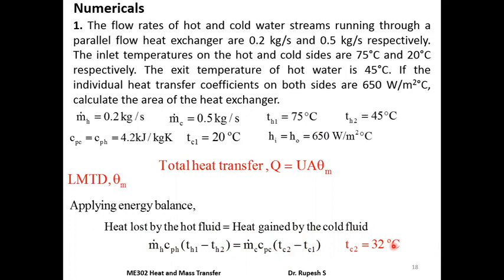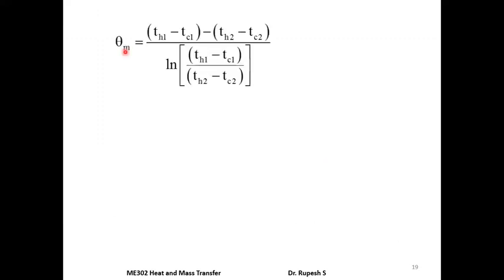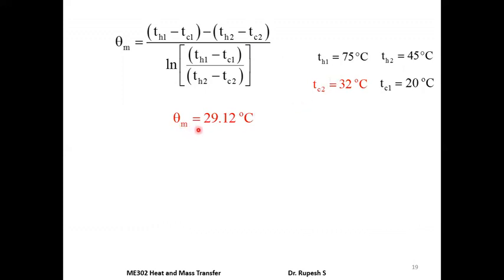Now we have all four temperatures and can find the LMTD. The LMTD for a parallel flow heat exchanger is given by: θm = [(Th1 - Tc1) - (Th2 - Tc2)] / ln[(Th1 - Tc1) / (Th2 - Tc2)]. This equation is available in the data book. Substituting all temperature values gives θm = 29.12°C.